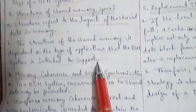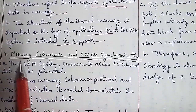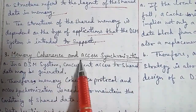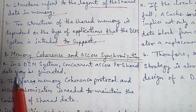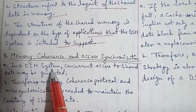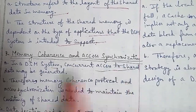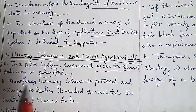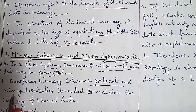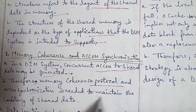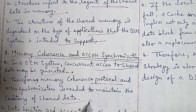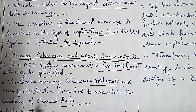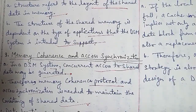The third point is memory coherence and access synchronization. In a DSM system, concurrent access to the shared data may be generated. Therefore, a memory coherence protocol and access synchronization are needed to maintain the consistency of shared data.